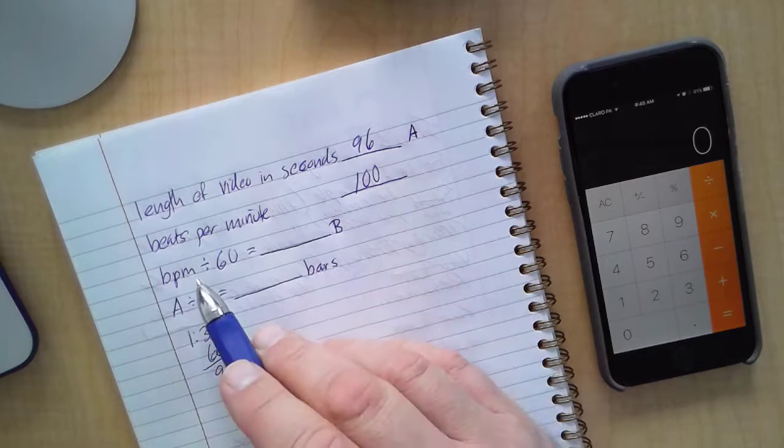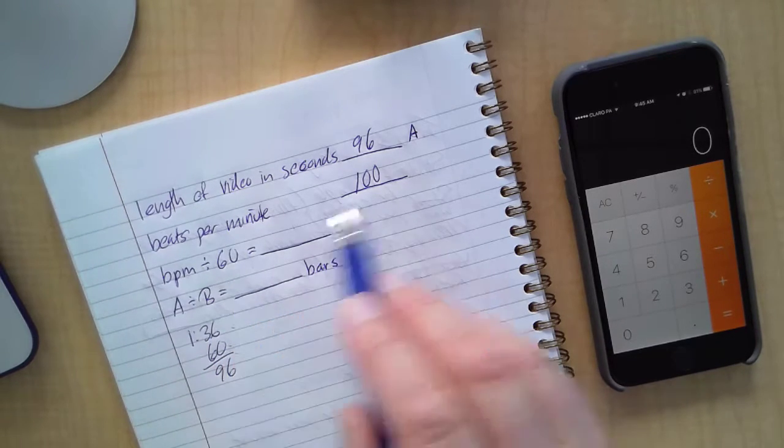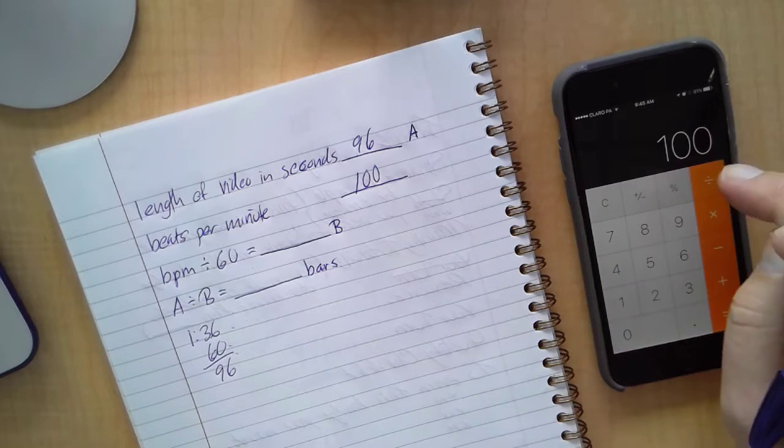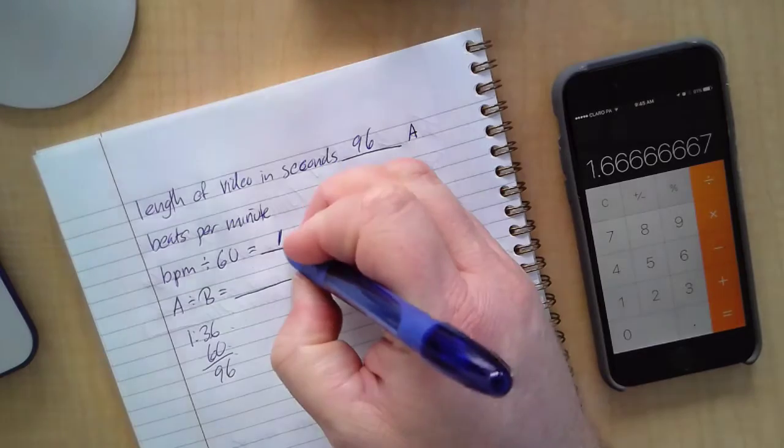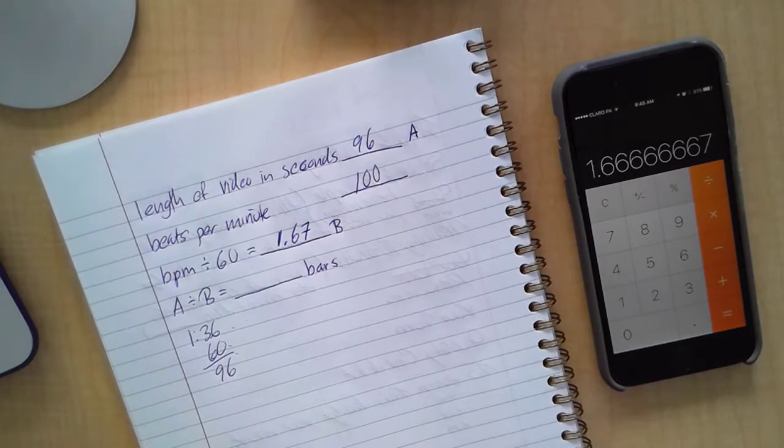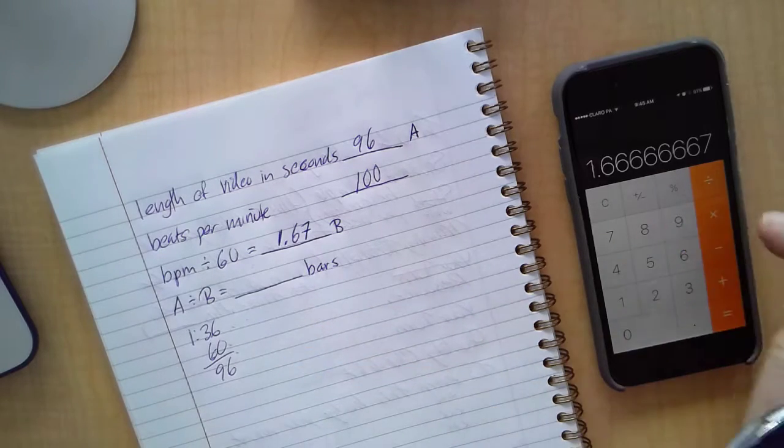Now for this one here, it says I've got to take my beats per minute and divide by 60. So I'm gonna take my 100 and divide by 60. That equals, if I round up, 1.67 beats per minute. I mean, this value that we need for B.